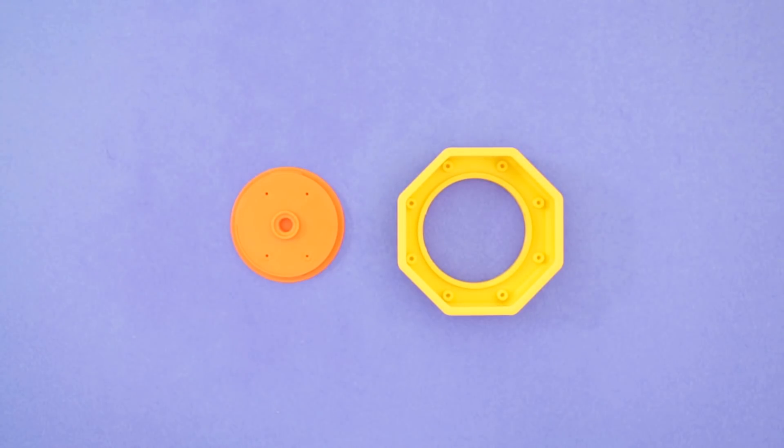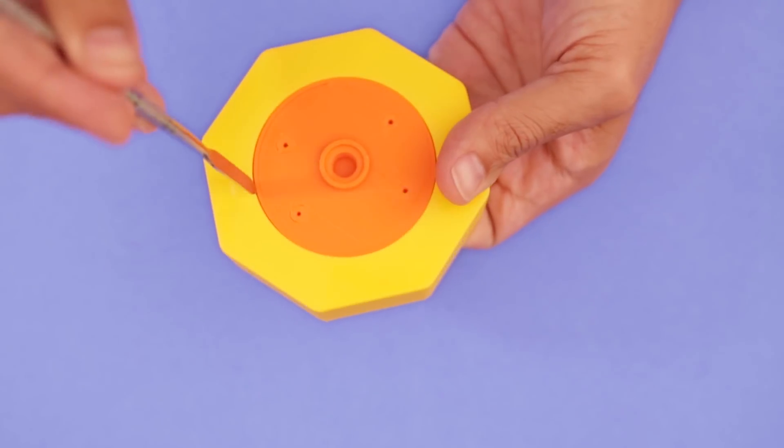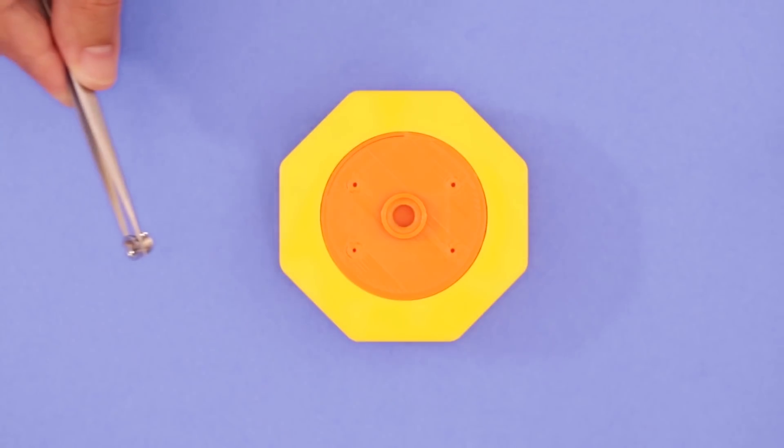Our 3D printed tripod mount snap fits onto the enclosure and locks in place. You can install a threaded insert to attach camera mounts and tripods.